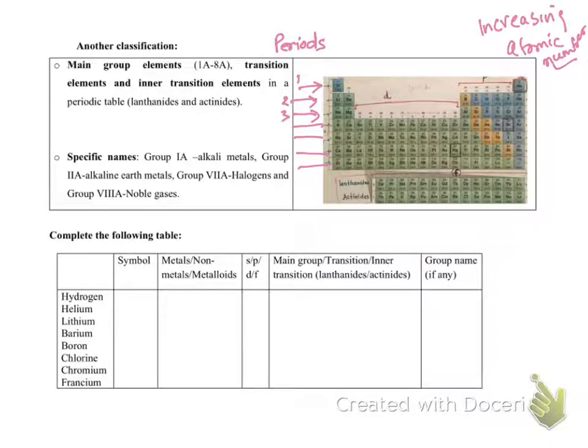And there are 18 vertical columns, and these vertical columns are known as groups.